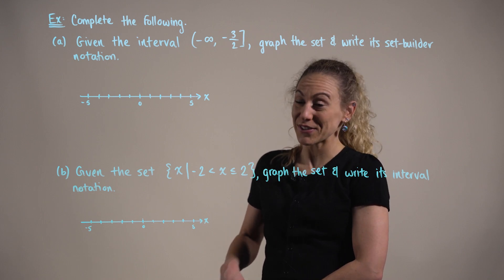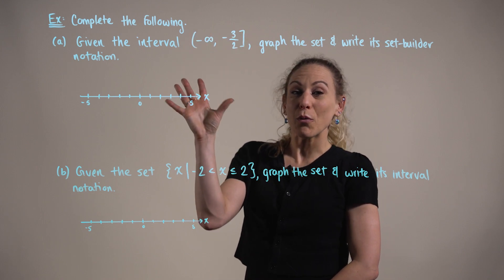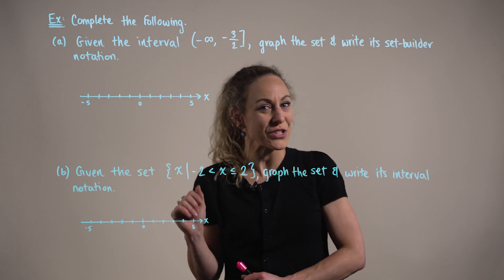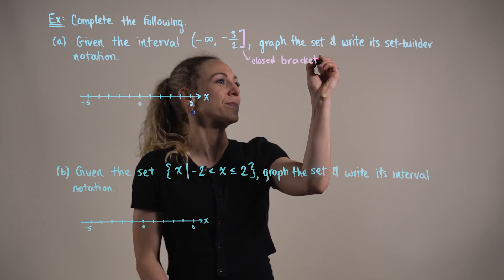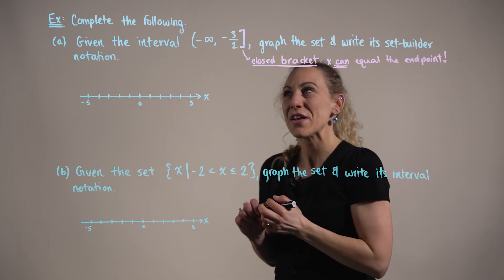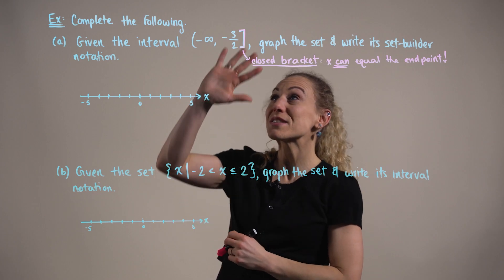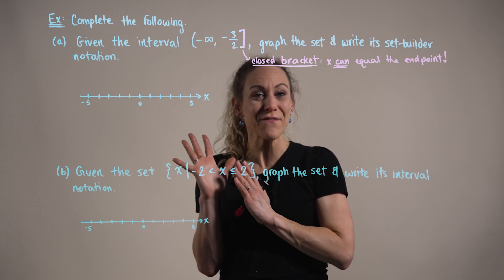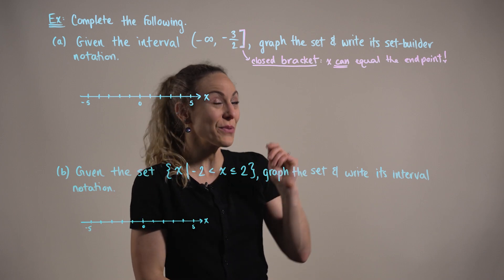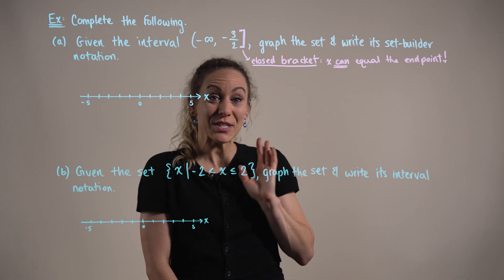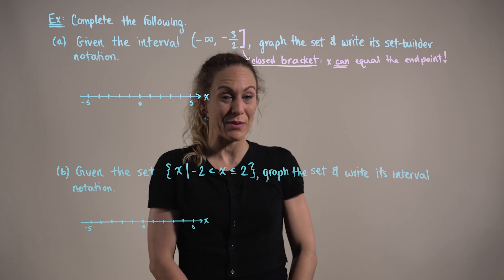So first things first, looking up at our interval, we want to observe any important features of this interval. Looking up at our interval, we realize of course we have an infinite interval. We're also observing the square bracket at the end point, which is implying that x can equal this end point.